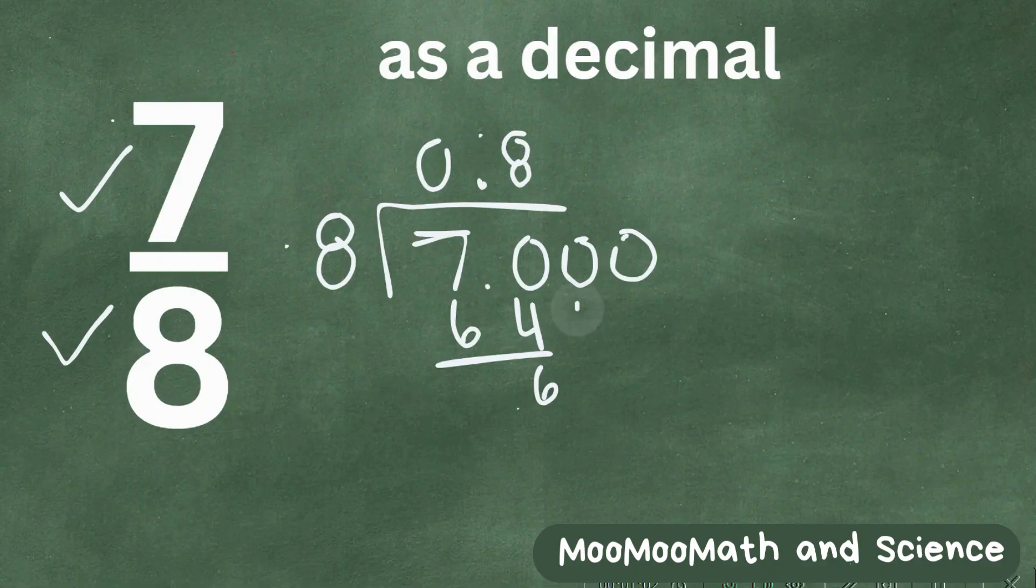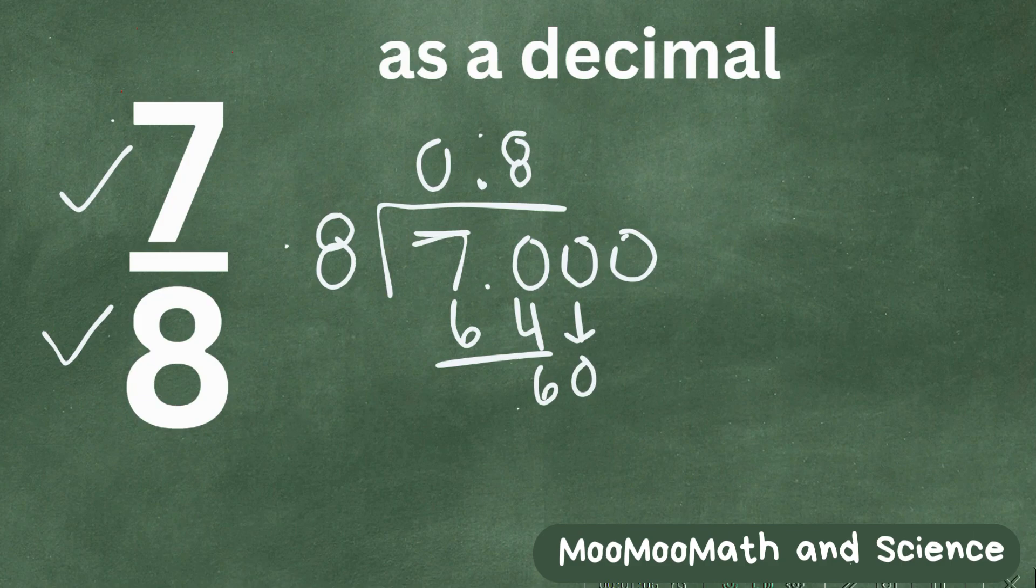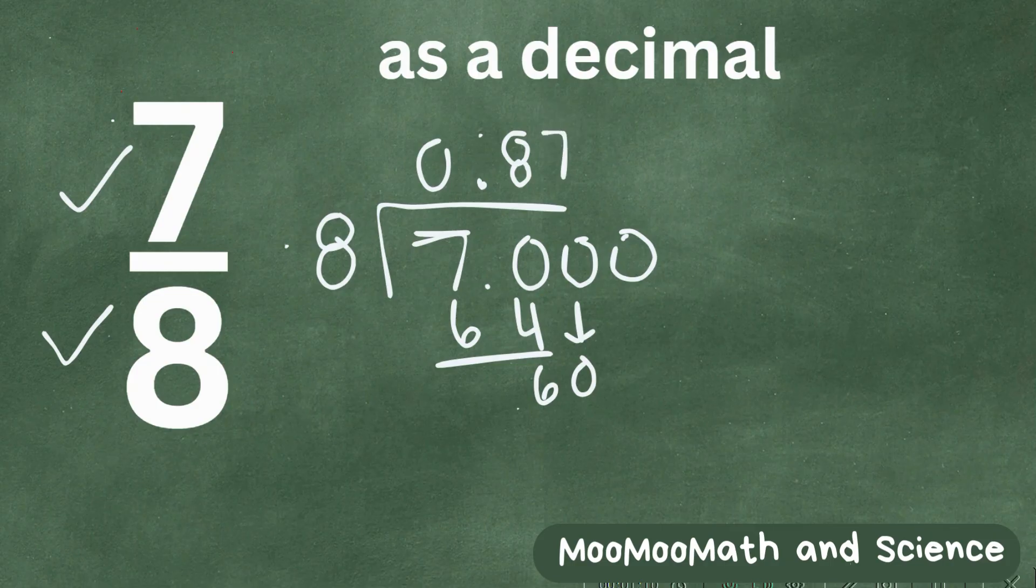Let's bring down a 0, and that gives you 60. 8 will not go evenly into 60, but 7 times 8, 7 times 8 is 56. When you subtract that, that gives you 4.